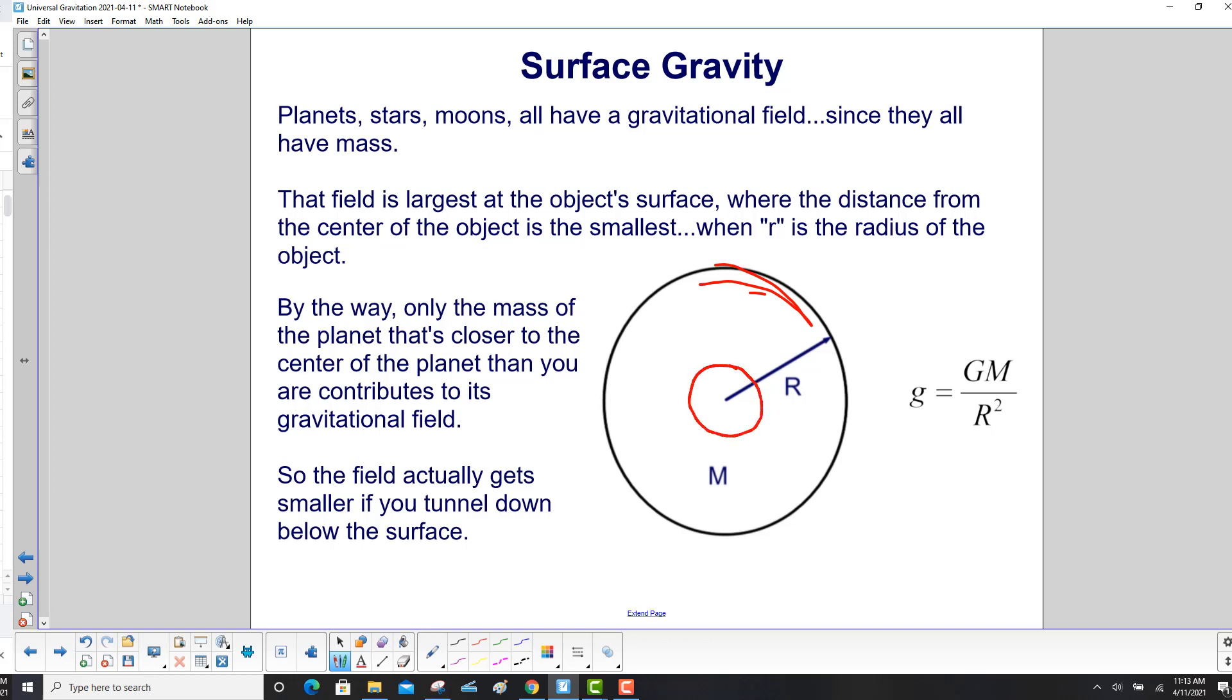For example, if somehow you were to get here, which is impossible, the only part of that sphere or planet that is causing this gravitational force is between you and the center of the planet. Everybody else doesn't count. So again, here's our little g.